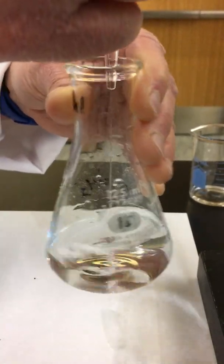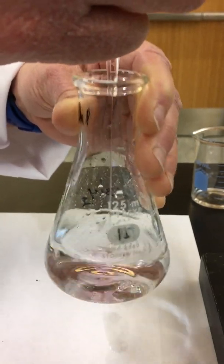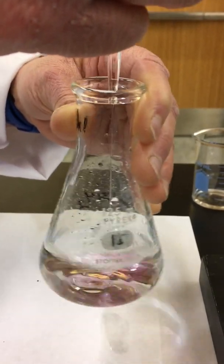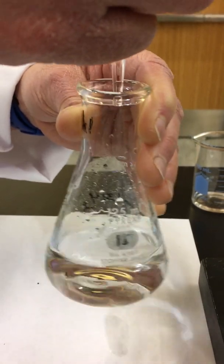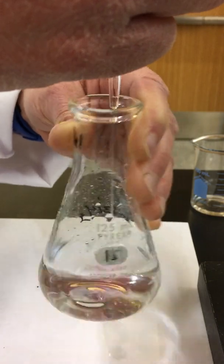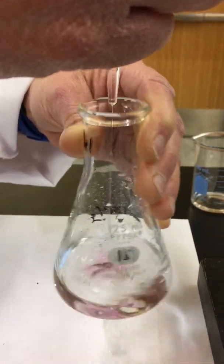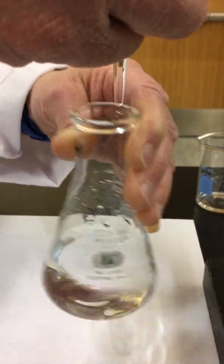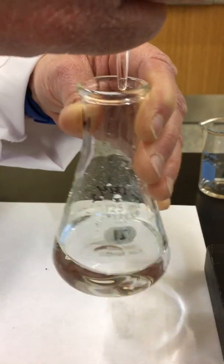And so what will happen, as you get closer and closer to that endpoint of titration, the pink color is going to persist longer and longer. So when we start to get to that point, we'll start to slow it down, because we want to know exactly what volume of sodium hydroxide it took to get to the endpoint.